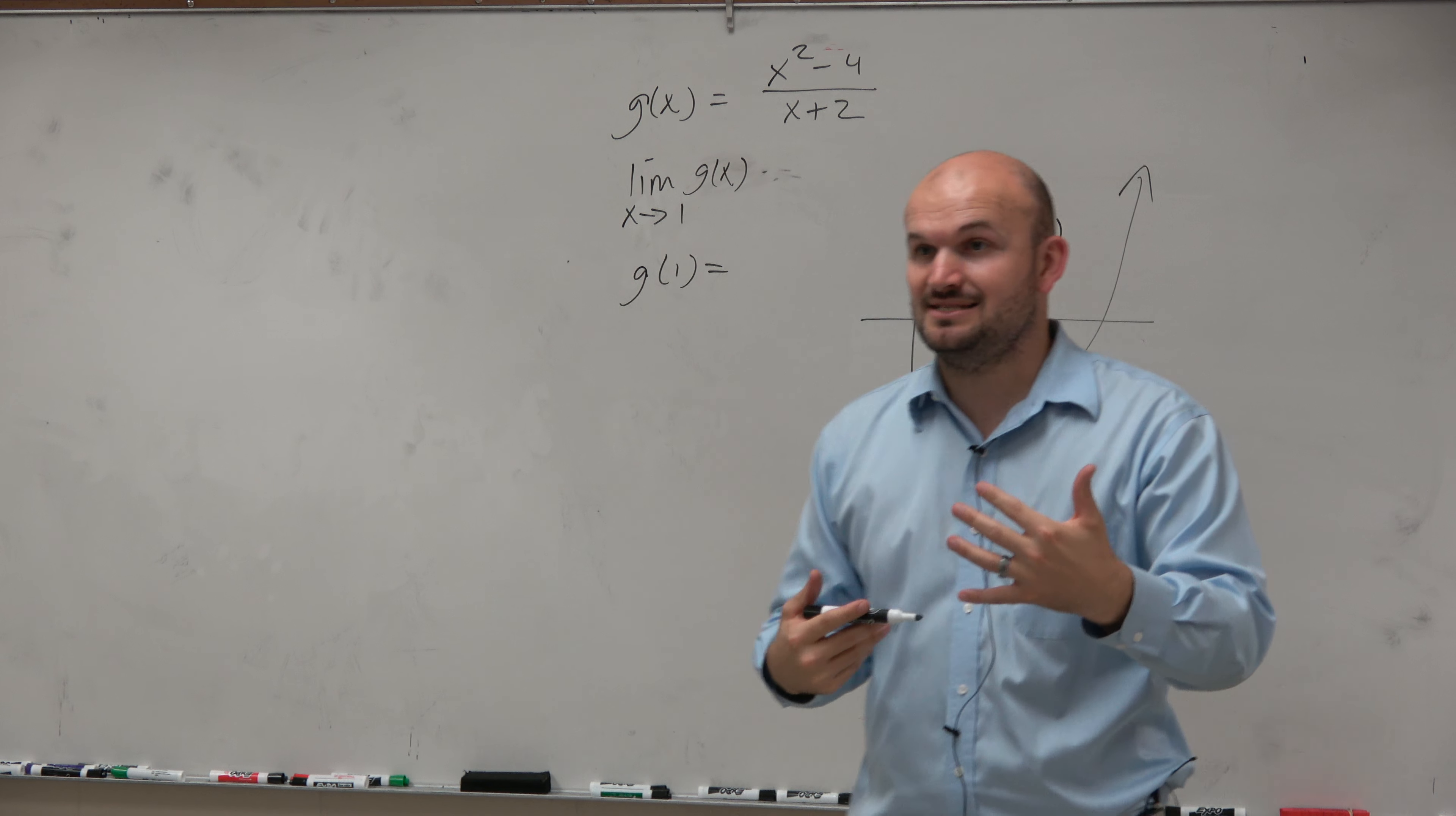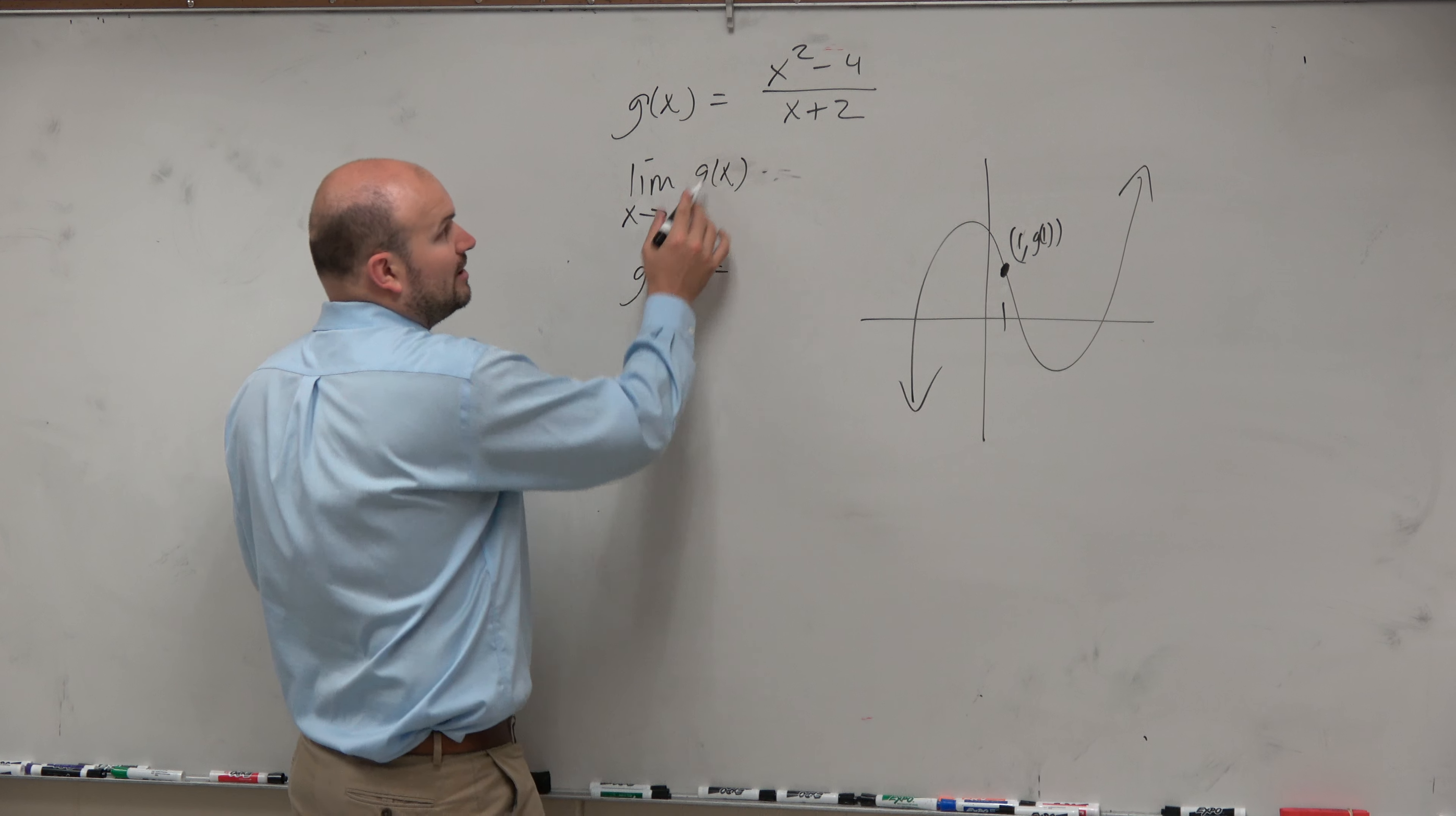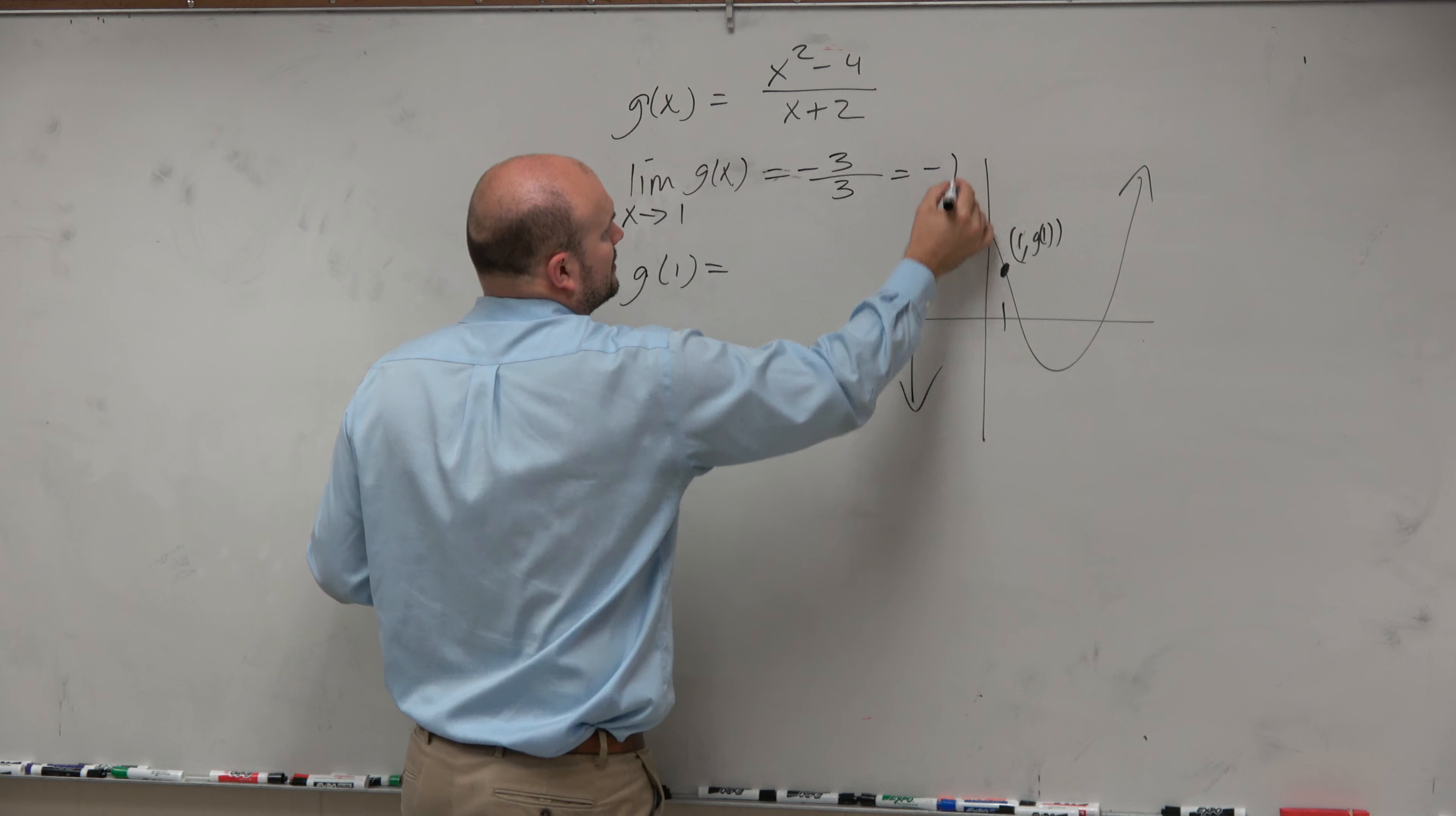The easiest, fastest way to evaluate a limit is just called direct substitution, just plugging in your values. So you're going to take 1, plug it in for x. So 1 squared is 1 minus 4 is negative 3, and then 1 plus 2 is 3, so that equals negative 1.